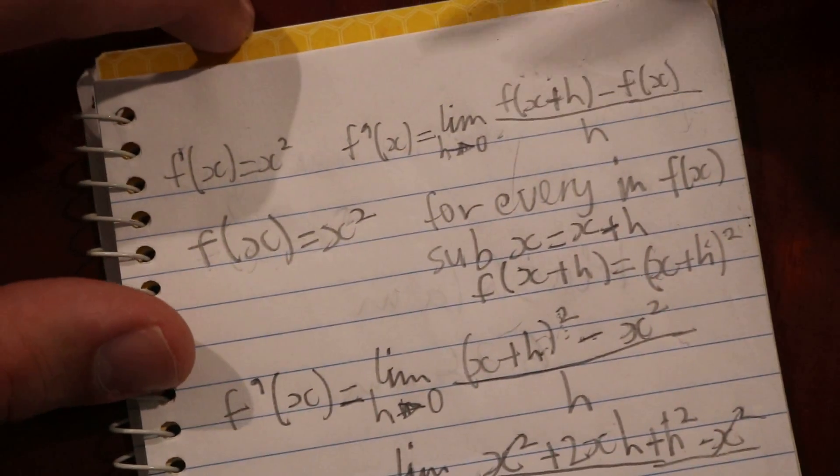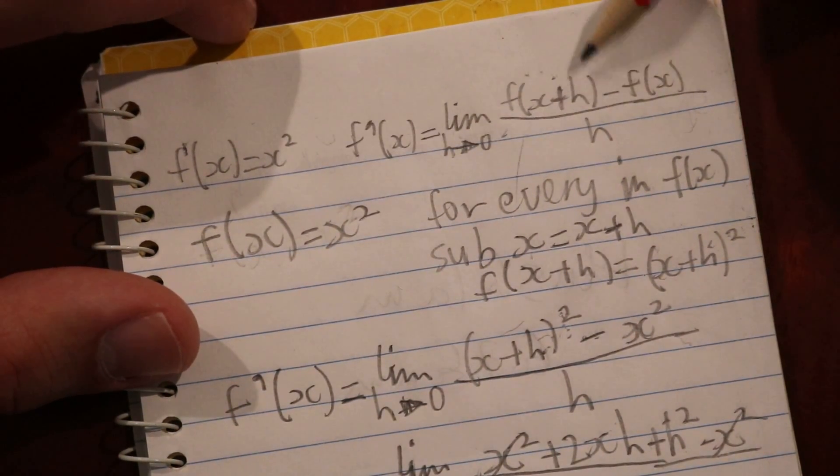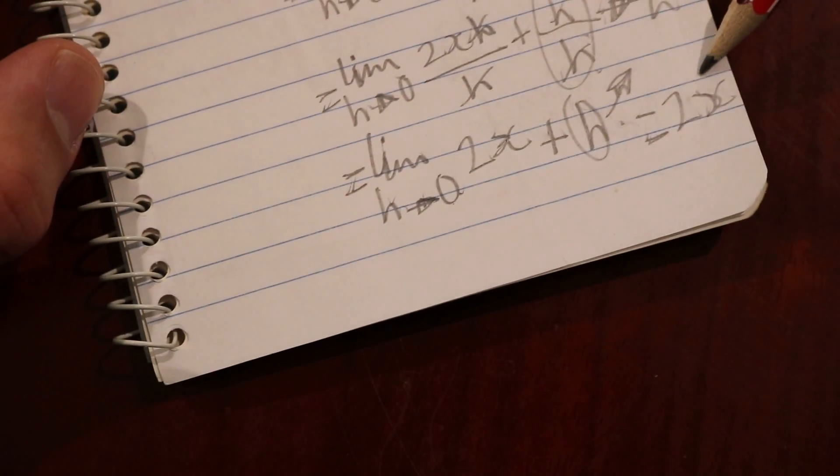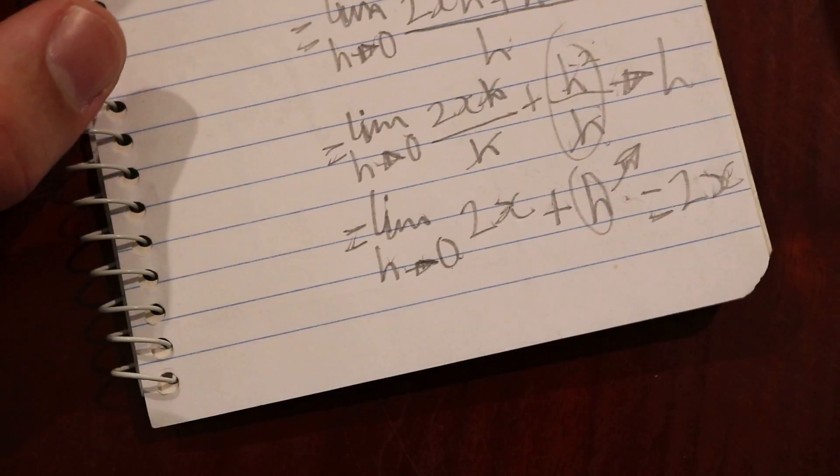As we can see, finding the derivative of x² using first principles gives us 2x. Thanks for watching, guys.